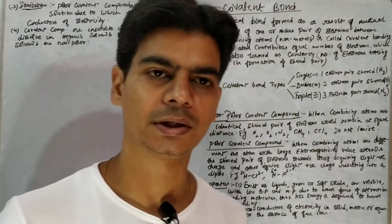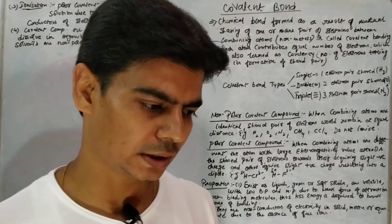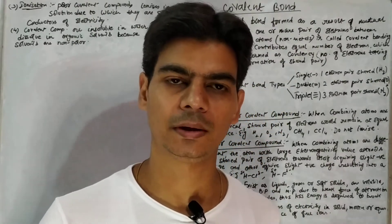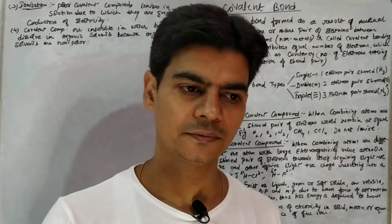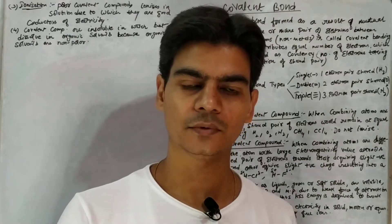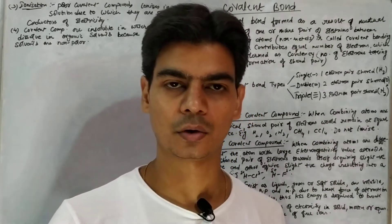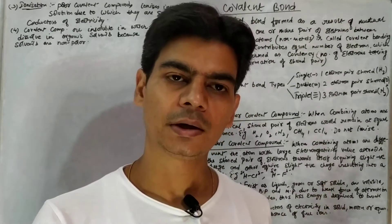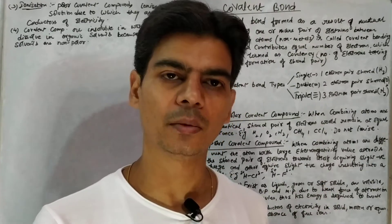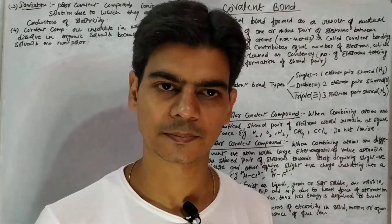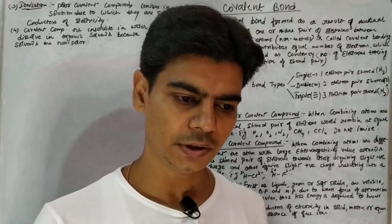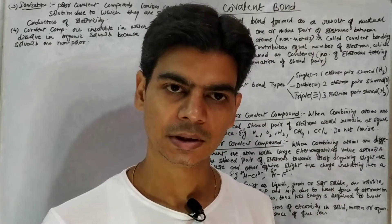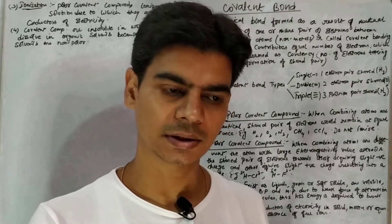In this video lecture we will understand covalent bonding. Before this we have understood electrovalent bonding, which was formed between a metal and a nonmetal. Similarly, covalent bonding will form between two or more nonmetals, so whenever you see any compound that consists of nonmetals, you can directly understand that it consists of a covalent bond.